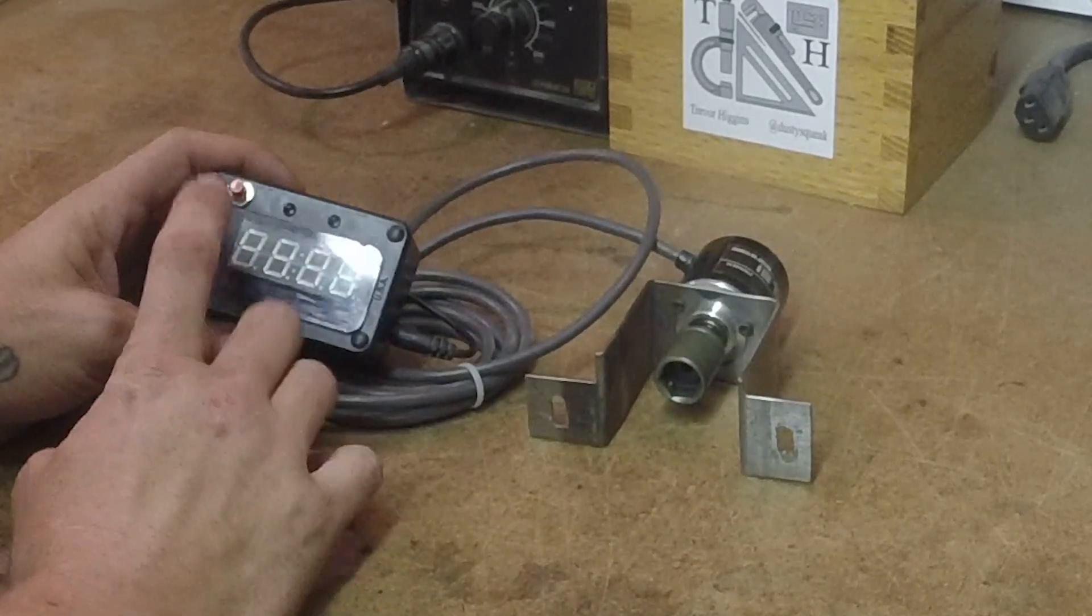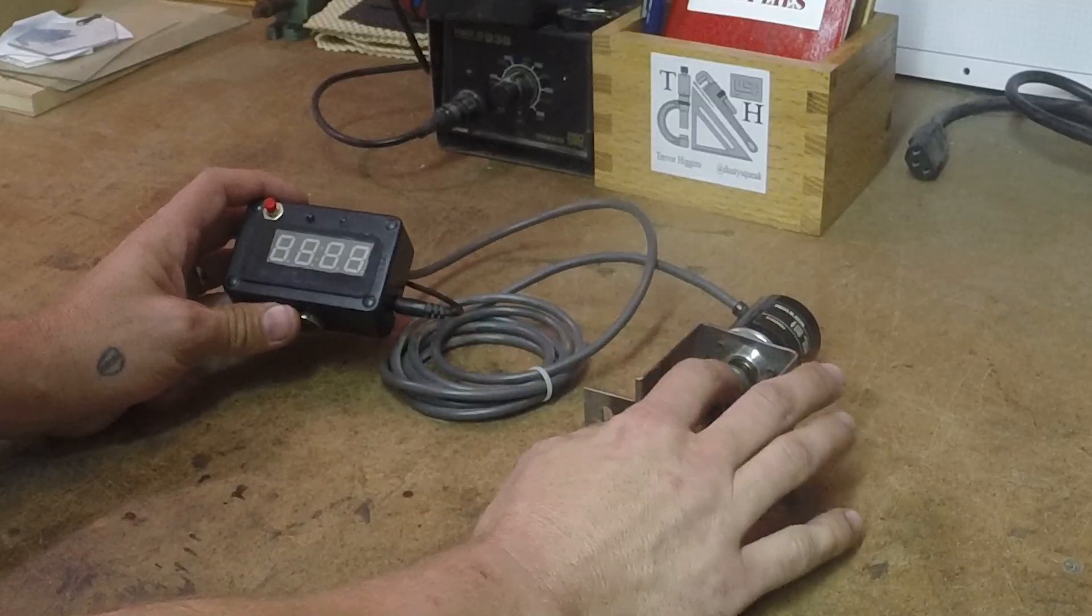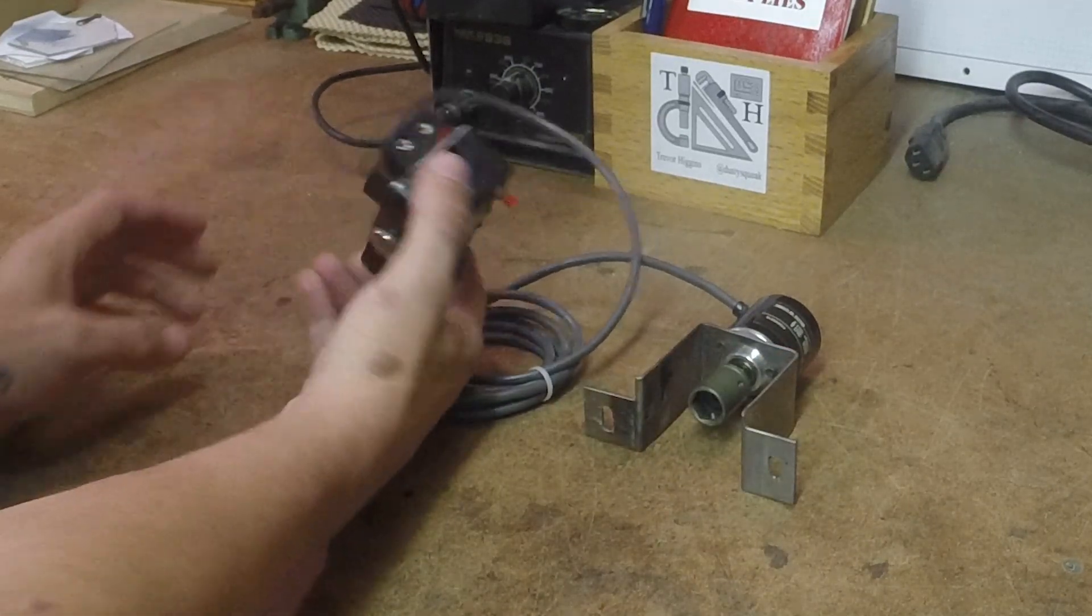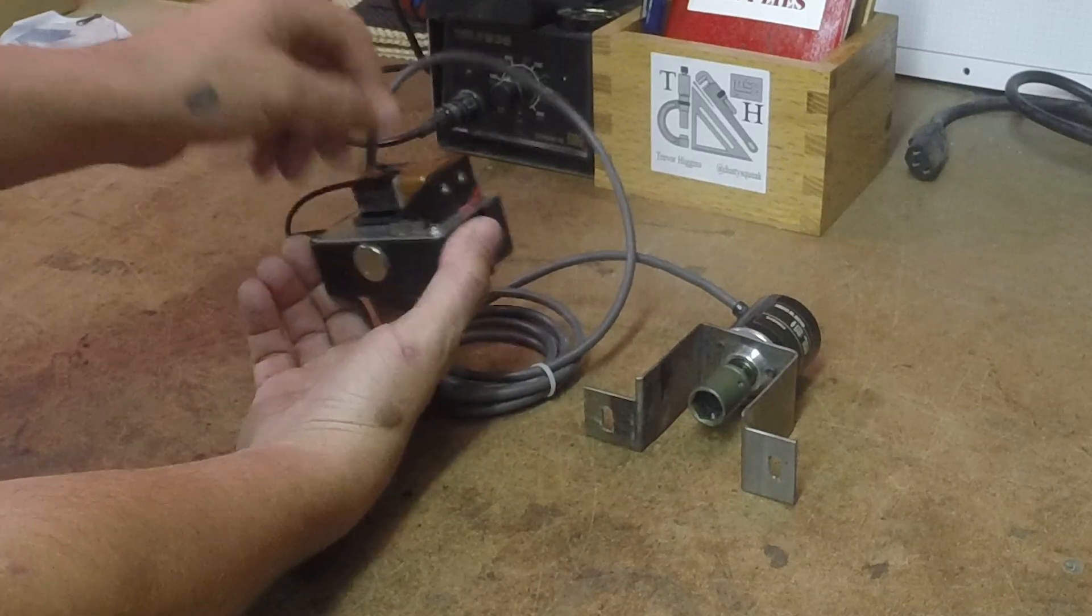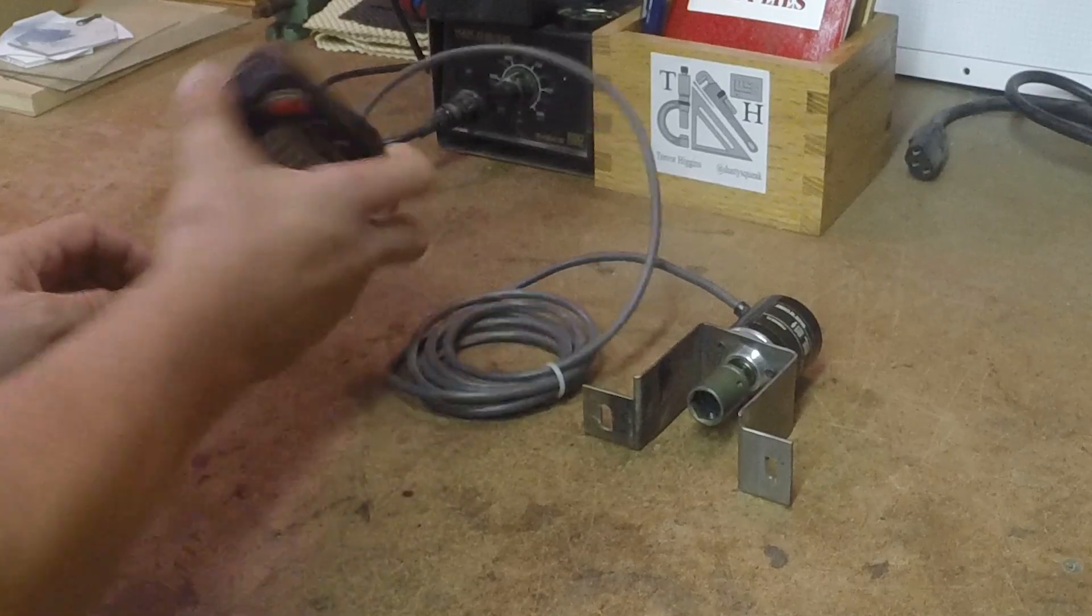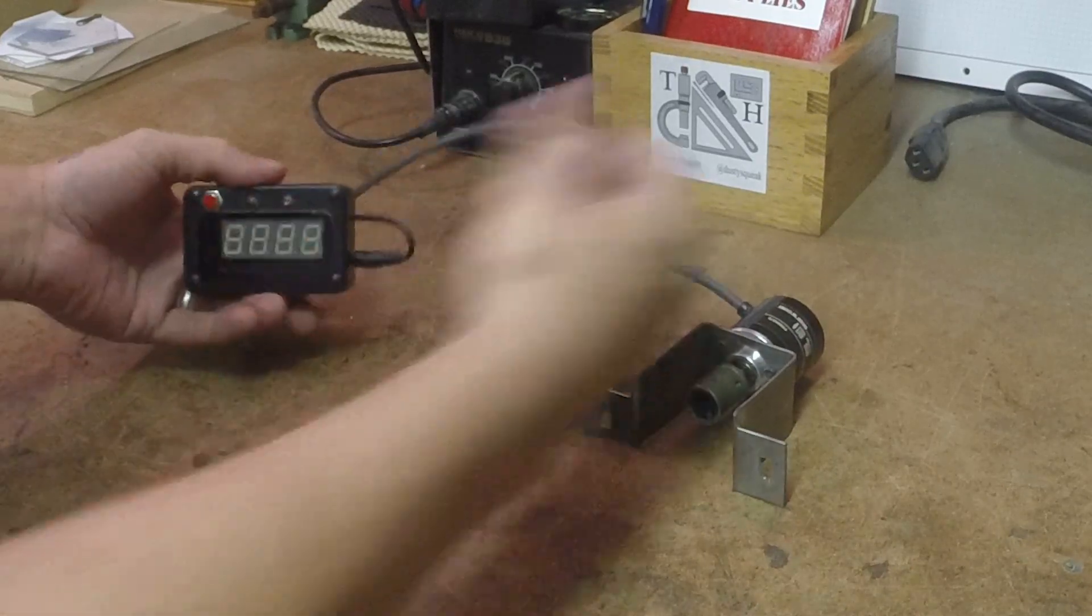That attaches to an Arduino mini which takes that information and translates it into a measurement. The power supply is either a nine volt or you can run it off of a wall wart. I've got a heavy magnet so I can stick it where I can see it while I'm cutting.